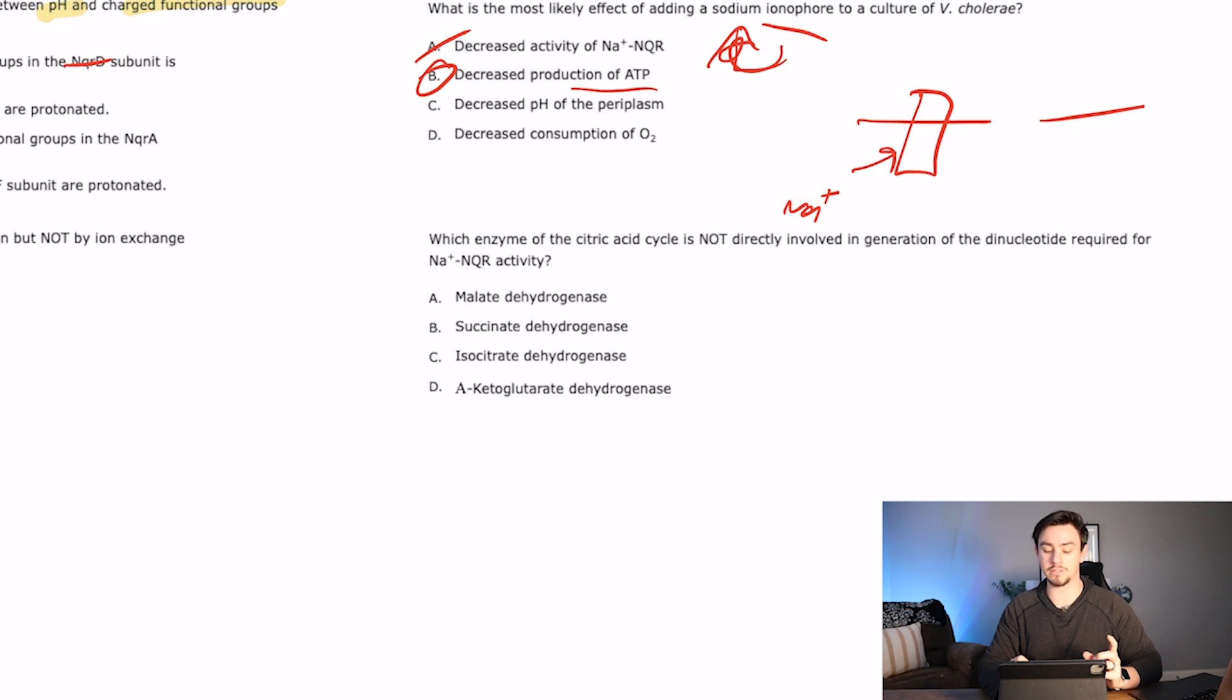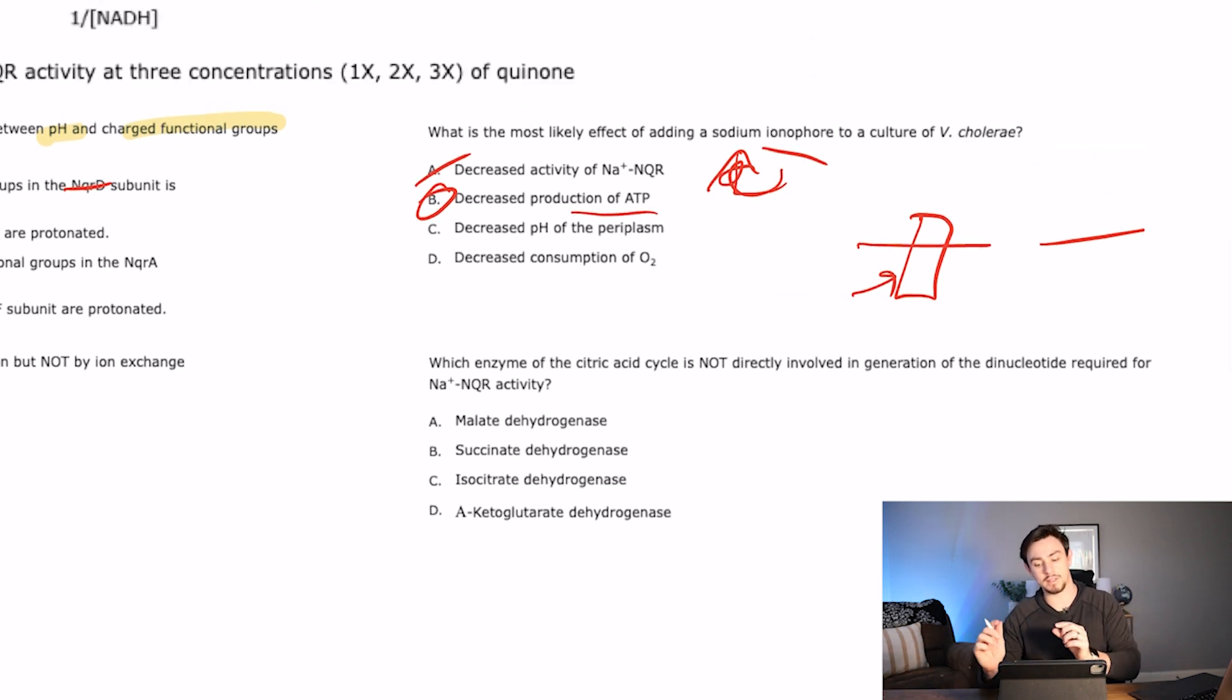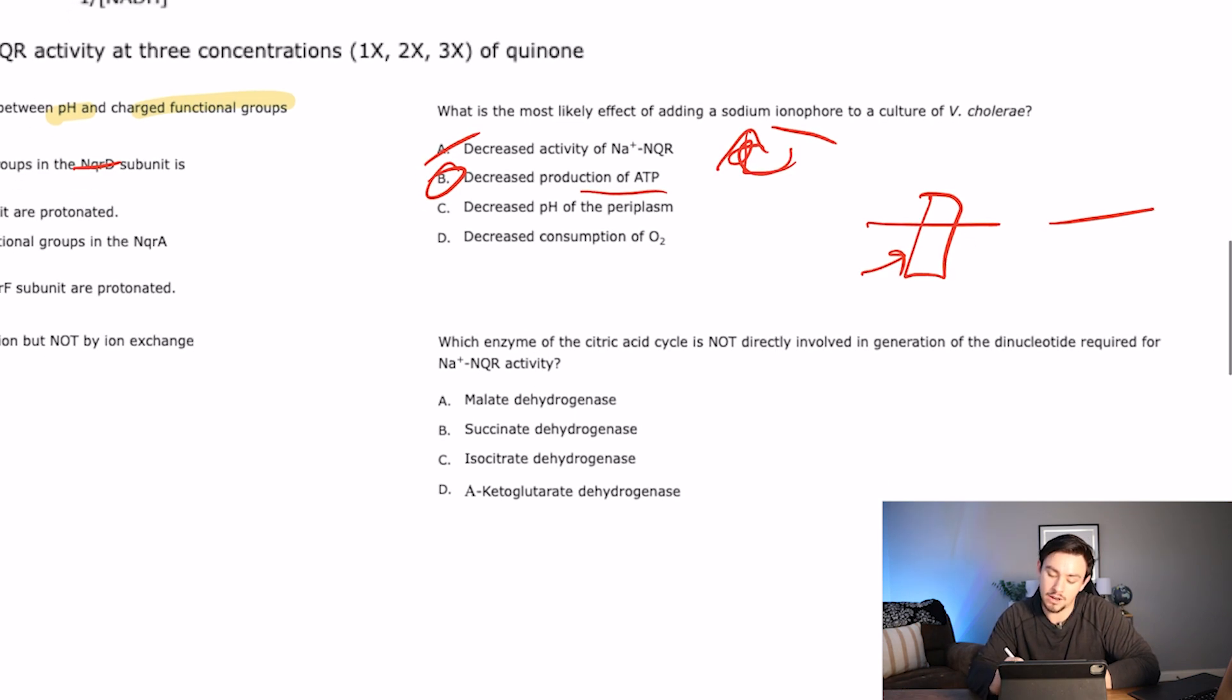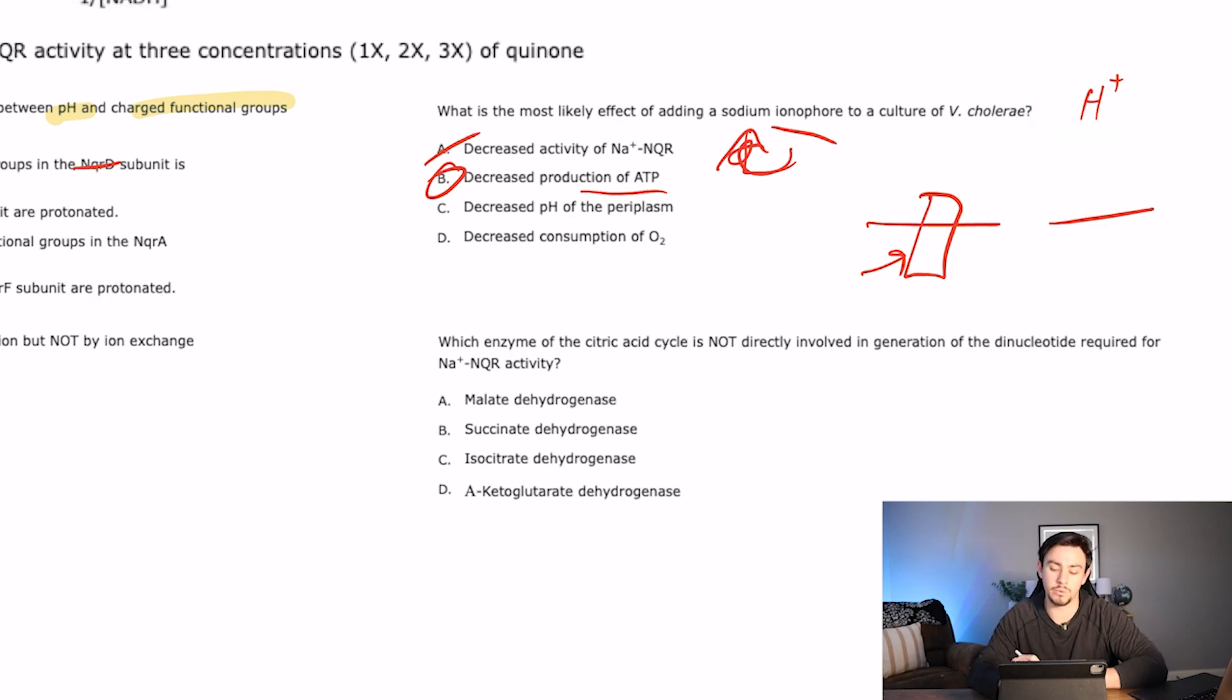So if we can't establish that gradient, then we're not going to decrease the activity. What we're going to decrease is the ability to produce ATP. You can get to this by asking yourself about the electron transport chain, because that's what the passage made a good parallel to. So imagine, for example, if you were to poke a hole in the electron transport chain that allowed the hydrogen ions to come back through the molecule. If you can't establish a hydrogen ion gradient, well, then you can't have a gradient large enough to crank the ATP synthase. So that's going to lead to decreased production of ATP. So I like B.